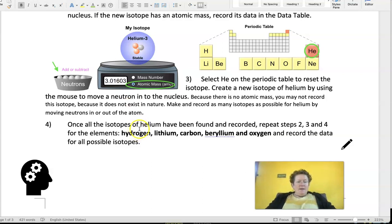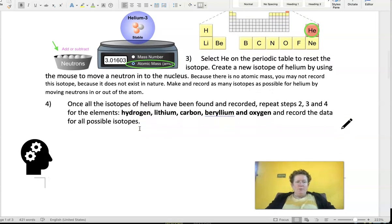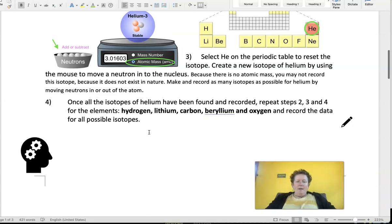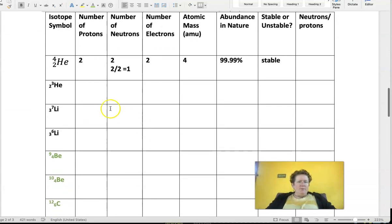Once all of the isotopes of helium have been found and recorded, repeat steps 2, 3, and 4 for the elements hydrogen, lithium, carbon, beryllium, oxygen, and fluorine if you'd like. Record the data for all possible isotopes. It seems very confusing, but we'll do it together and you'll see how it works.